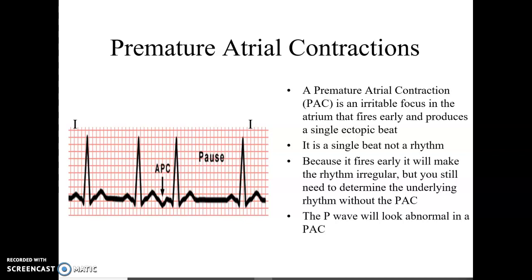Looking at this rhythm here, I can see that from P to P looks normal, and then this beat came early. The spacing from this beat to this beat is early, and then you can see it lengthens out — so this is going to make this an irregular rhythm. My rate in three seconds, it looks like I have one, two, three, four — so my rate would be 80.